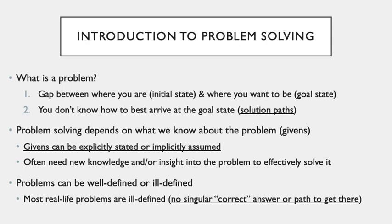Problem solving depends on what we know about the problem, and these are often referred to as the givens of the problem. Givens are basically information or rules that place constraints on the problem. These can be explicitly stated or implicitly assumed. Often we need new knowledge or some kind of new insight into the problem in order to effectively solve it.